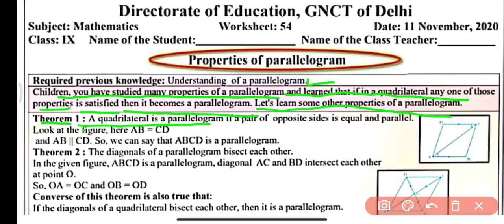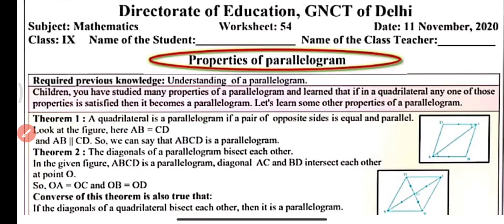Theorem 1: A quadrilateral is a parallelogram if one pair of opposite sides is equal and parallel. Here AB is equal to CD and parallel to CD, and similarly B is parallel to AD. In the figure, AB equals CD and AB is parallel to CD, so we can say ABCD is a parallelogram.